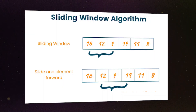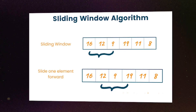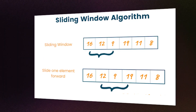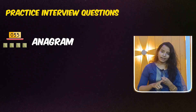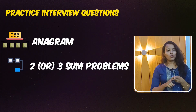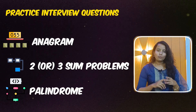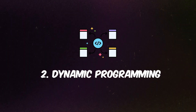To solve sliding window problems, fix a window and move it over the data. Practice interview questions include: anagram, two-sum or three-sum problems, and palindrome — these are all related problems.